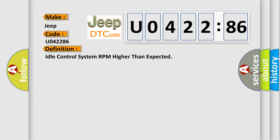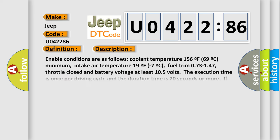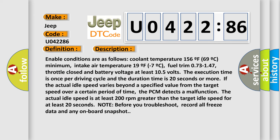And now this is a short description of this DTC code. Enable conditions are as follows: coolant temperature 156°F (69°C) minimum, intake air temperature 19°F (-7°C), fuel trim 073-147, throttle closed and battery voltage at least 10.5 volts.